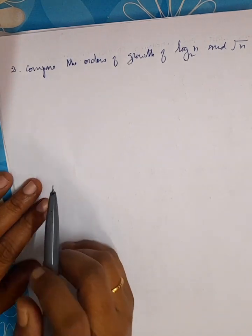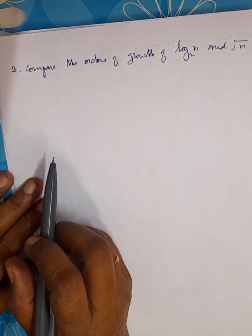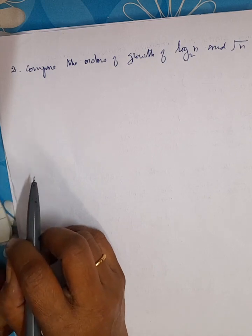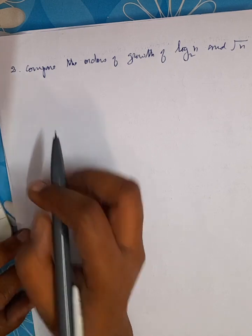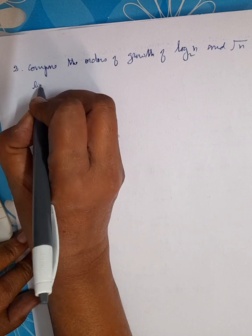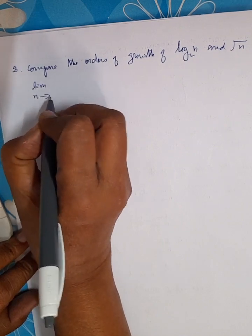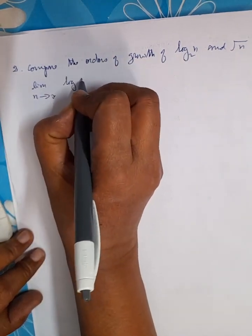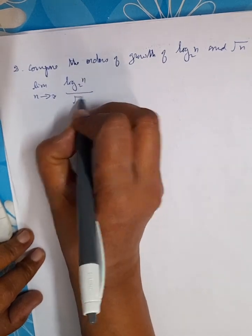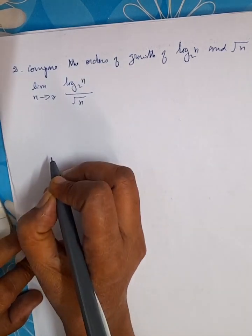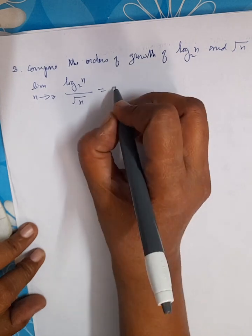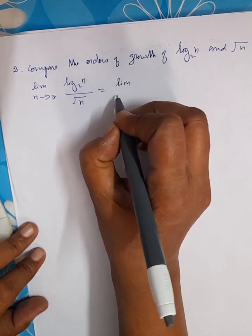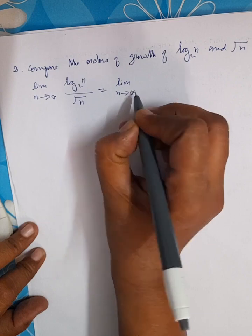Now let's see the second example: compare the orders of growth of log₂n and √n. We evaluate the limit as n tends to infinity of log₂n divided by √n.